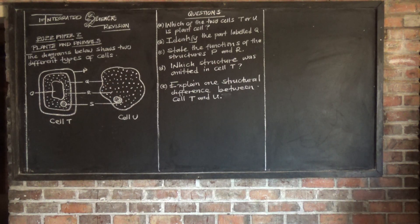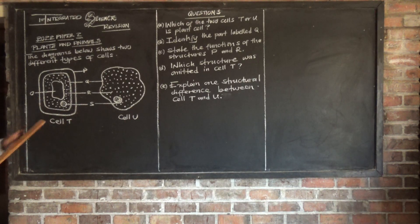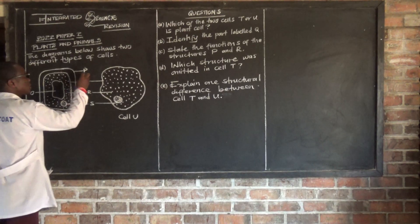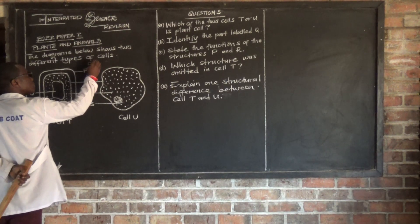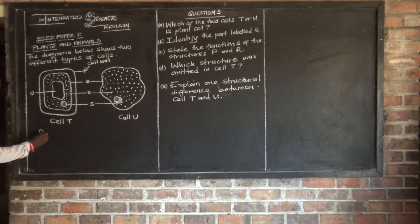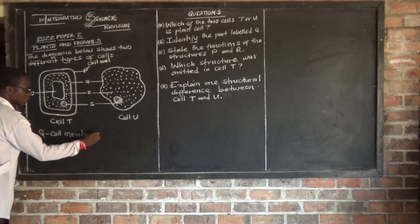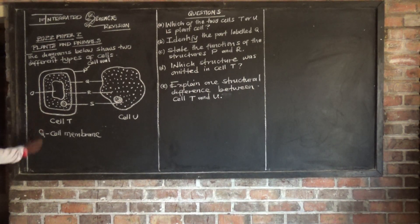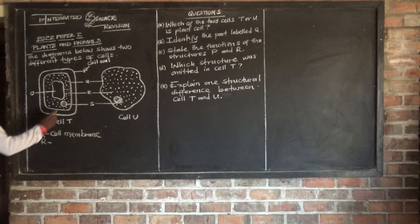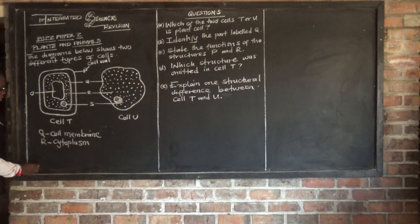We are going to identify these cells. Looking at Cell T, the outer part of Cell T is the cell wall. Then we have the cell membrane. Then we have O, which is the vacuole. P is our cell wall. Q, we are saying it's our cell membrane. R is our cytoplasm. Then S, this is our nucleus.